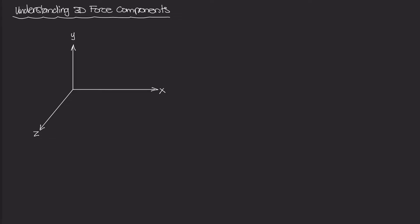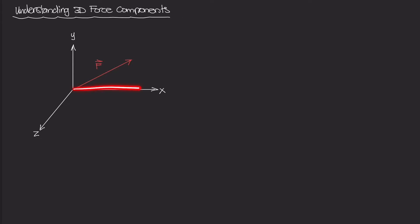So let's say I have this 3D coordinate system drawn here. Starting at the origin, I've drawn this force that's pointing out to somewhere in this three-dimensional space. This force vector looks like it's just in the XY plane, but I assure you it's not — it's in three dimensions. There's also a Z component.